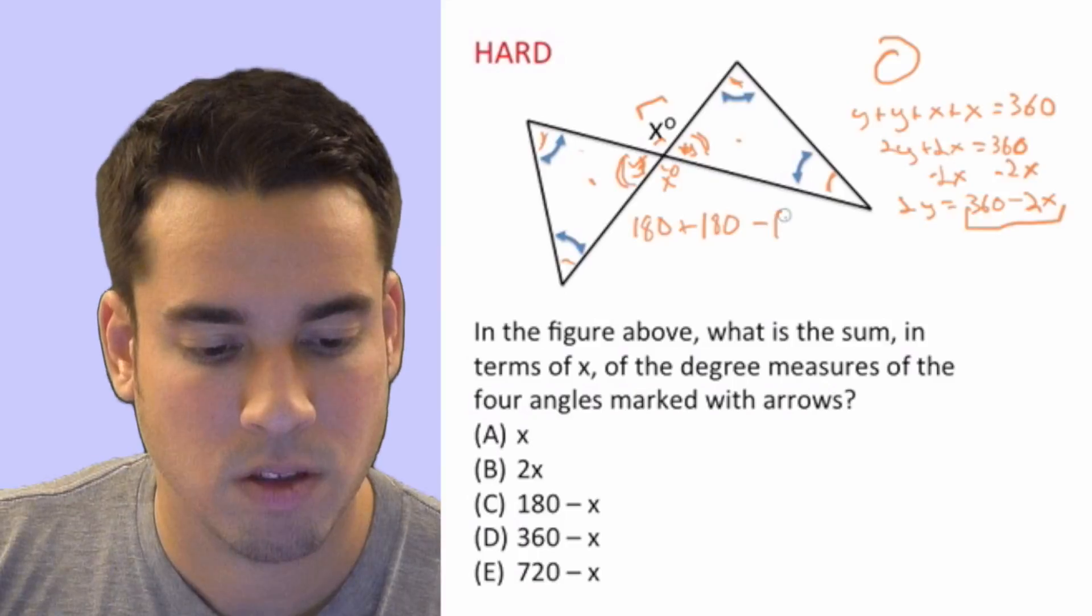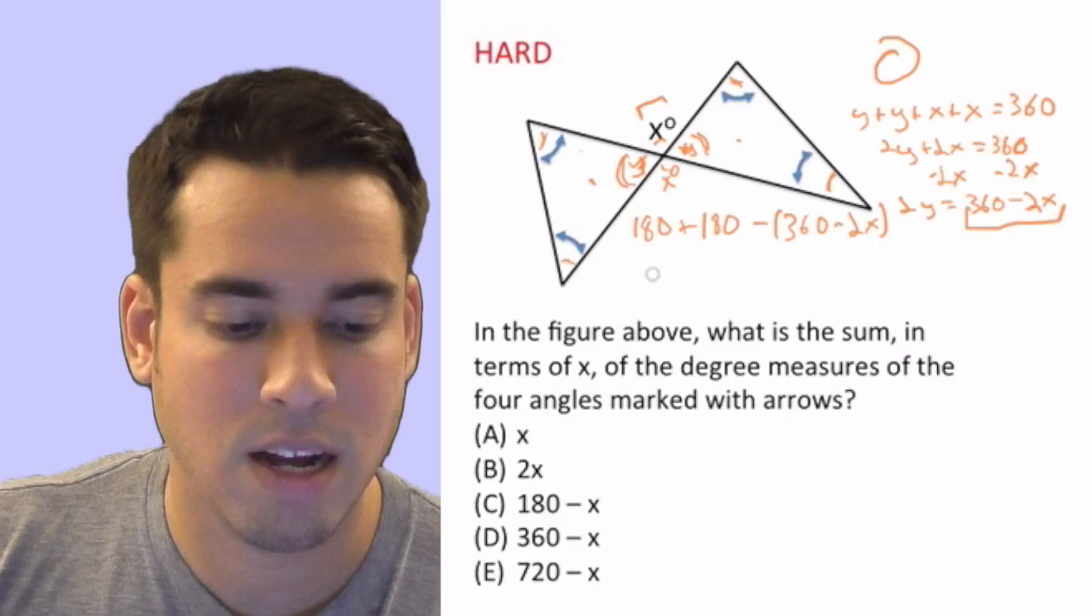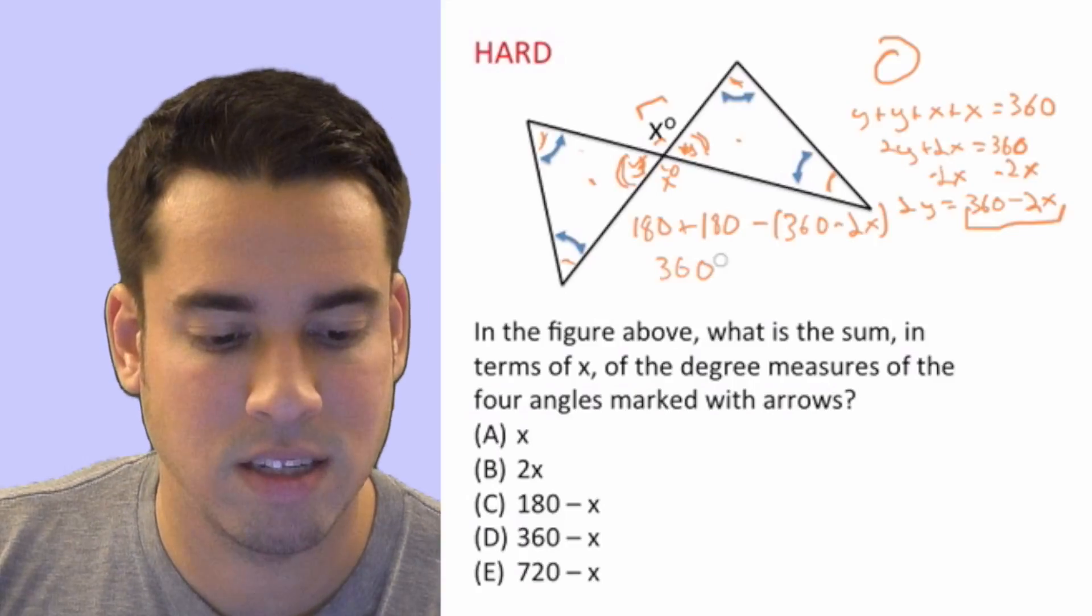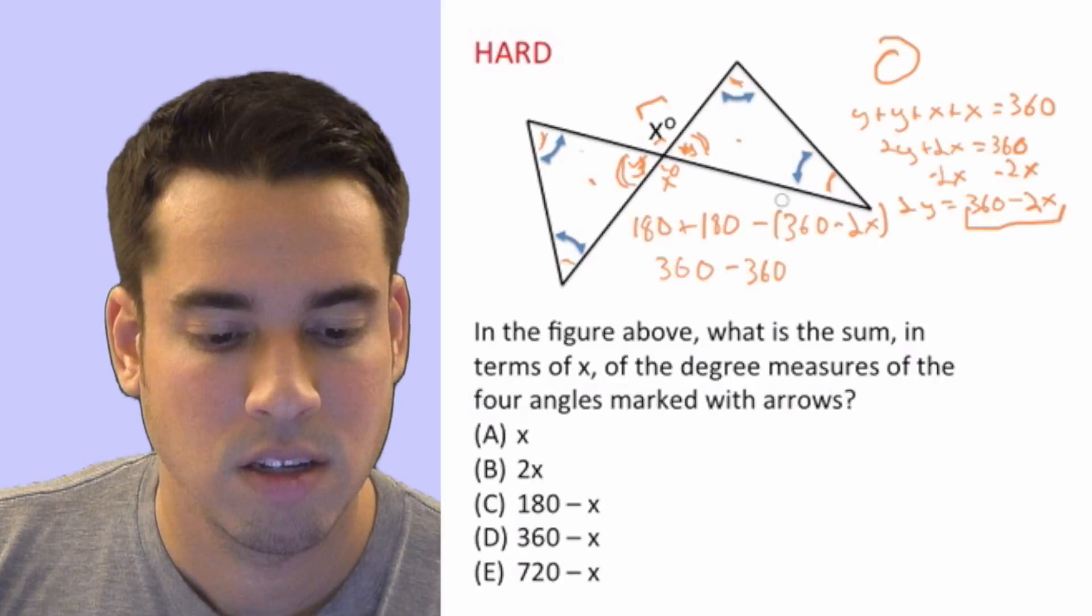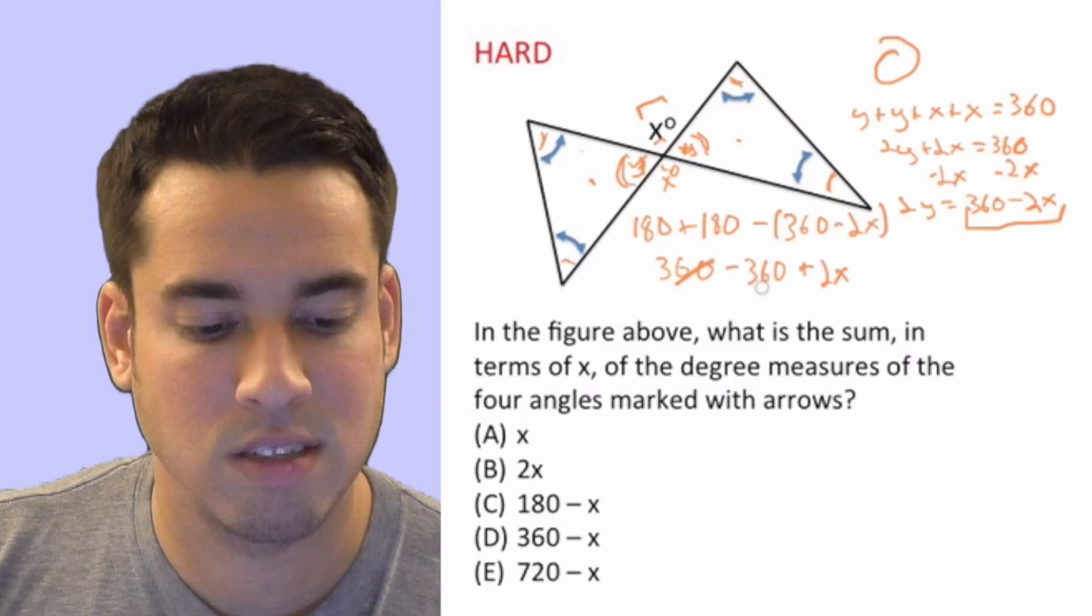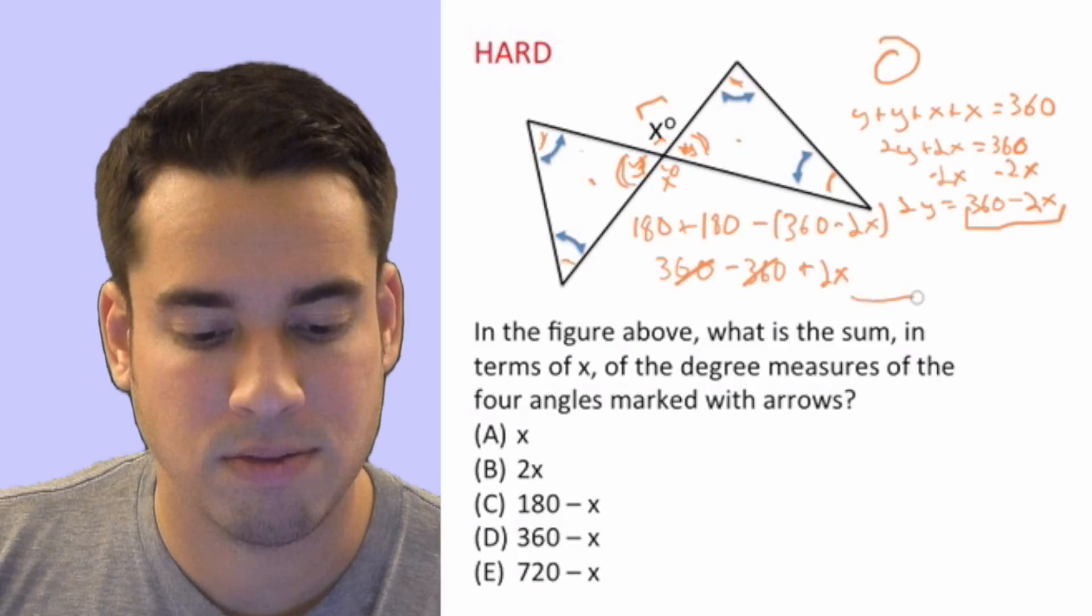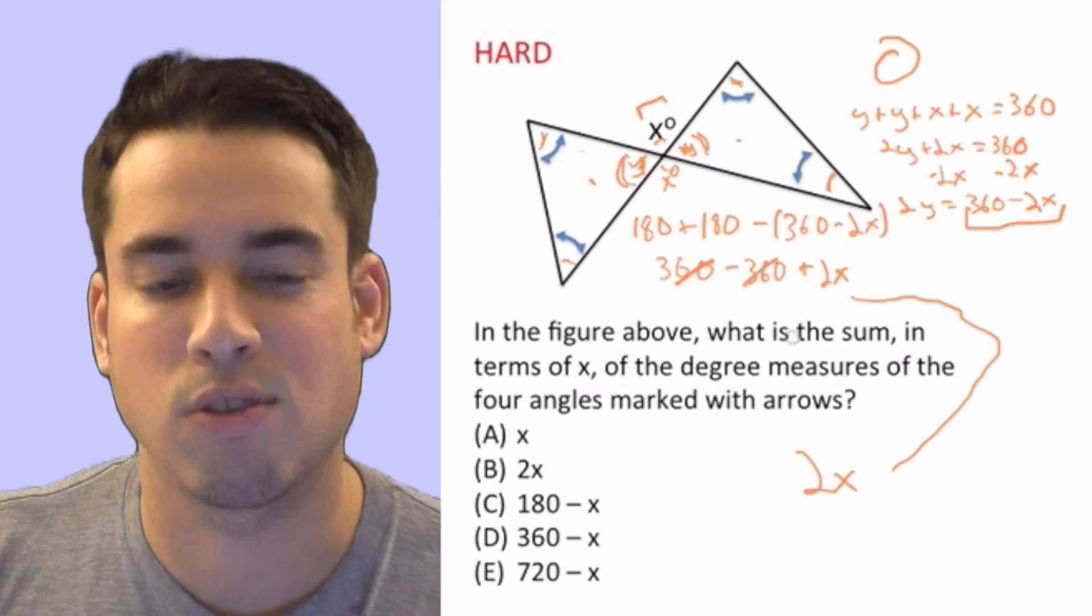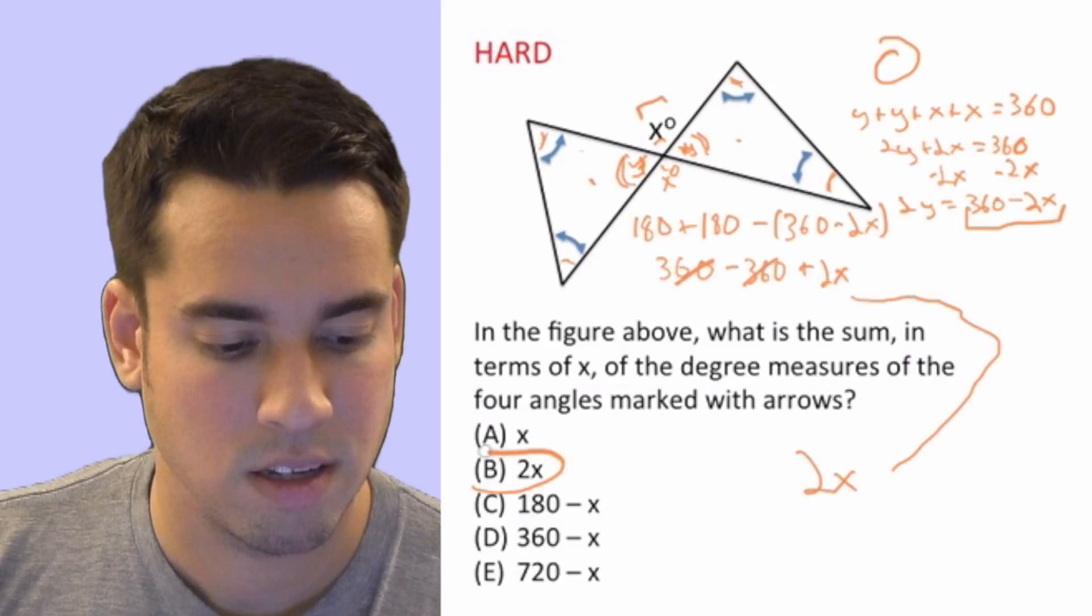Now let's continue to simplify this out. This becomes 360 minus 360. Remember, we got to distribute that negative sign, so it becomes plus 2x. And now look, you have 360 and 360 minus, cancel each other out, that becomes zero. And so we're left with simply 2x. 2x is our final answer. That is B, and done.